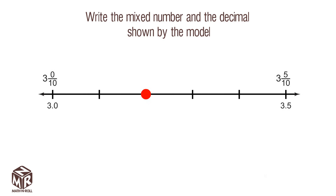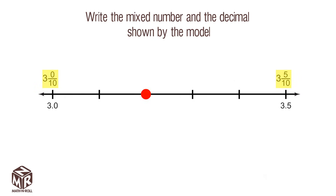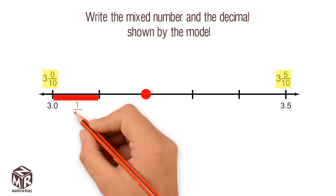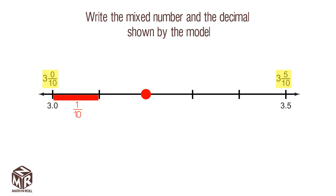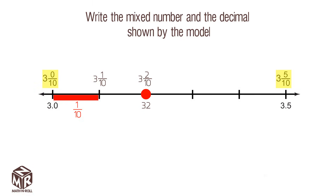Let's try another example. Write the mixed number and the decimal shown by the model. On the left side of the number line we see 3 and 0 tenths, or 3.0. On the right side we see 3 and 5 tenths, or 3.5. In between there are 5 parts. Each part represents 1 tenth. So the first point to the right of 3.0 is 3 and 1 tenth. To find the next point, we add 1 tenth. This point is 3 and 2 tenths, or 3.2. We can write 3 and 2 tenths as a mixed number and a decimal.